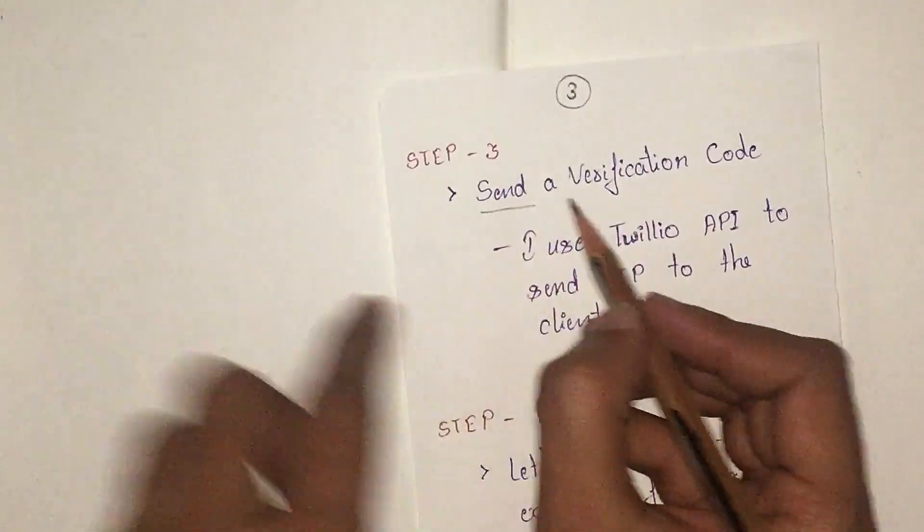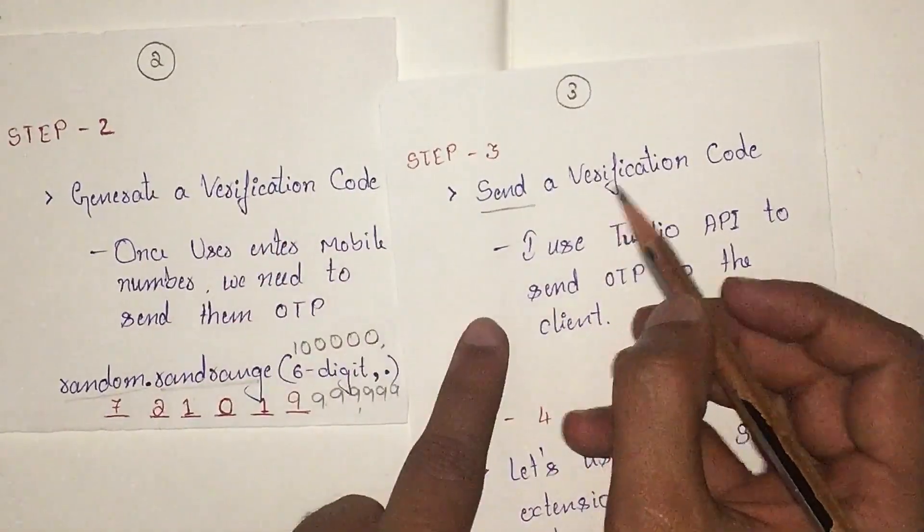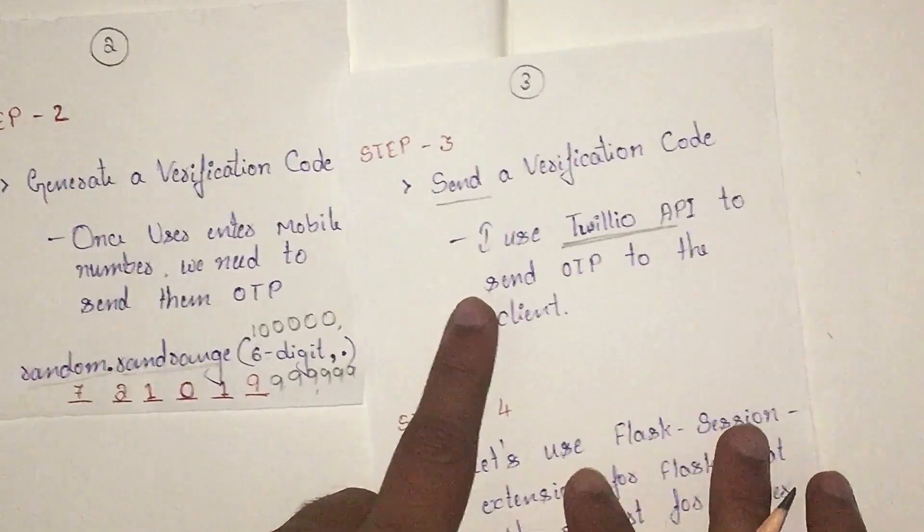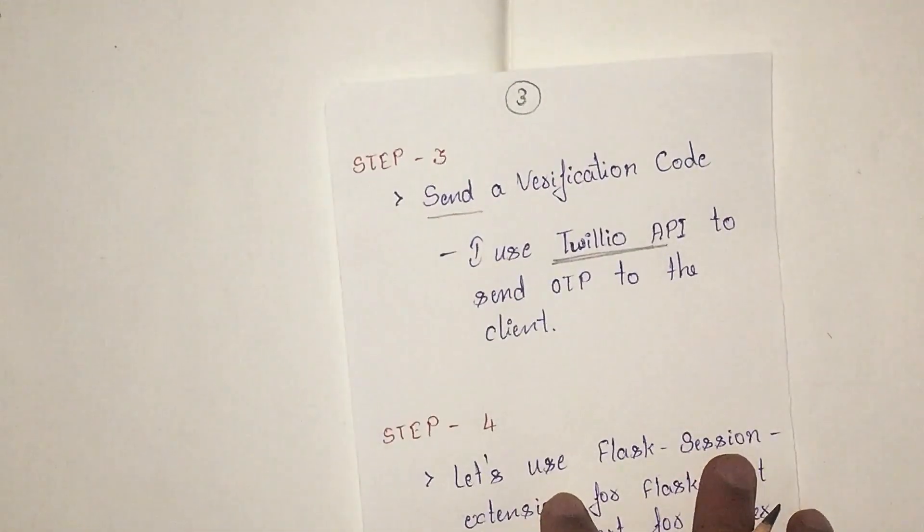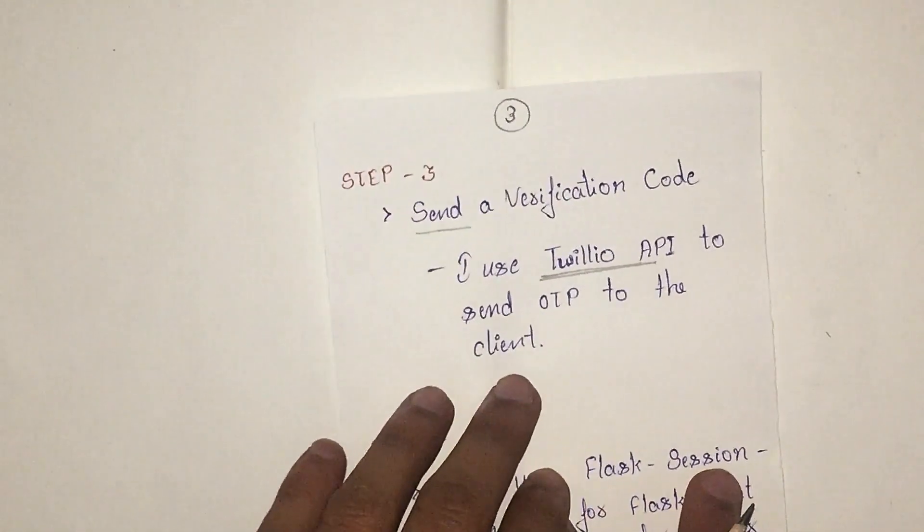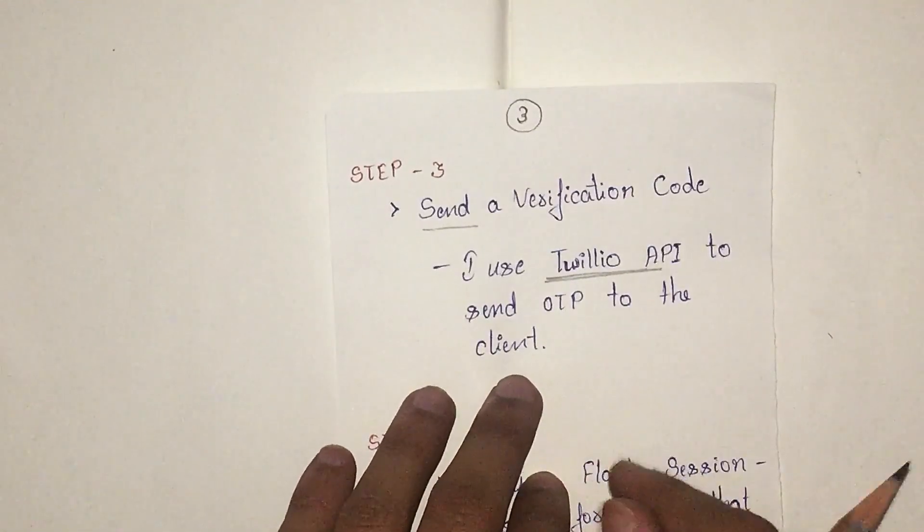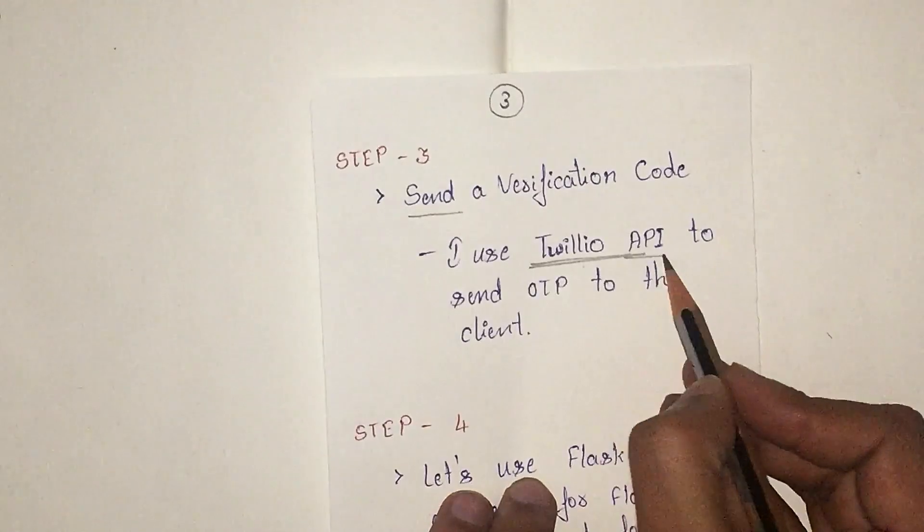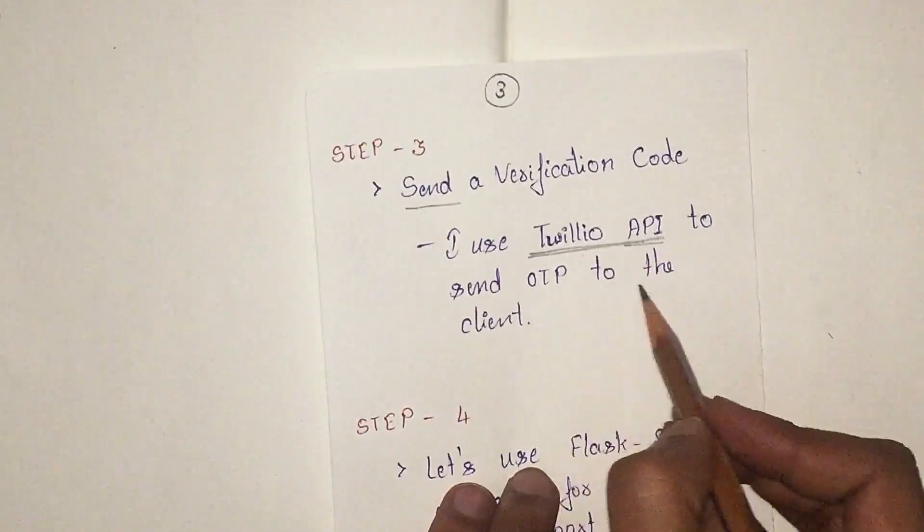Step 3 is sending it. How do we send this generated OTP? To send that, I am using an API called Twilio. If you haven't watched my previous video, I'll leave a link in my description. In this, I am going to use the Twilio API to send OTP to the client.